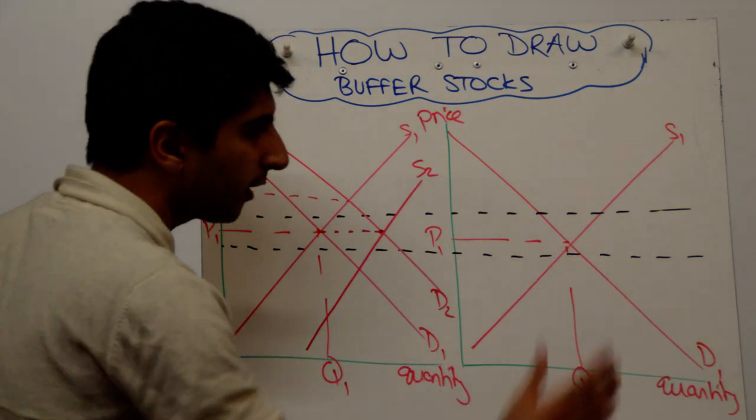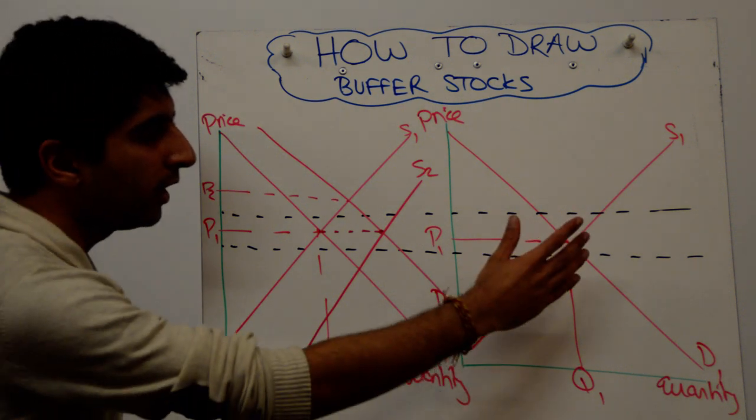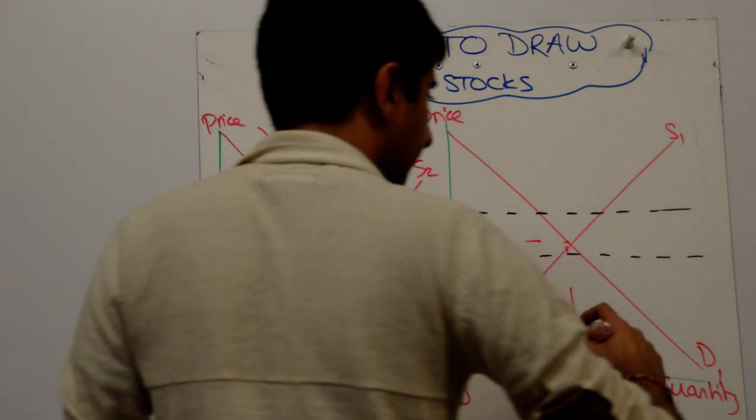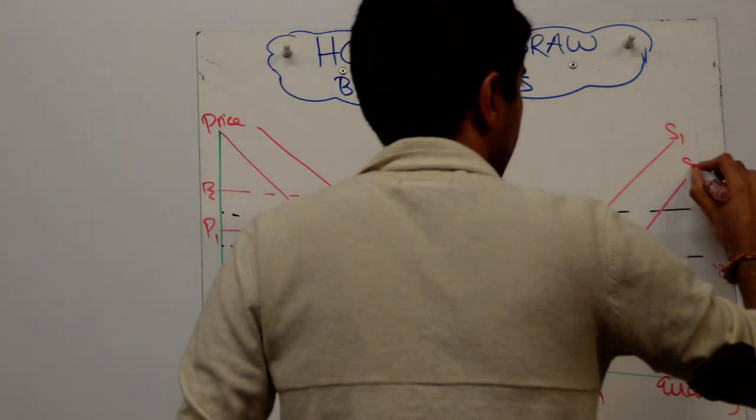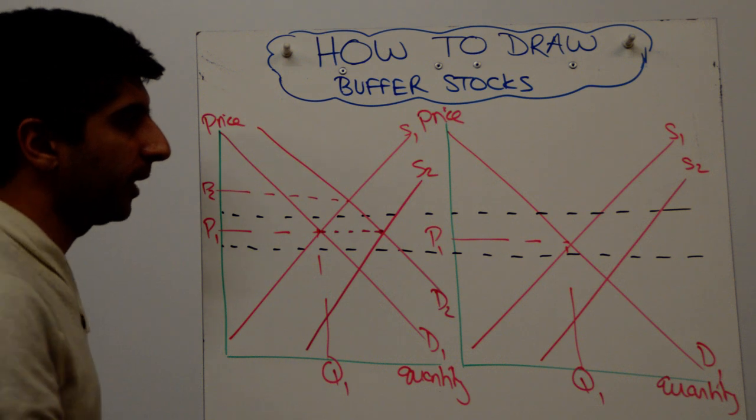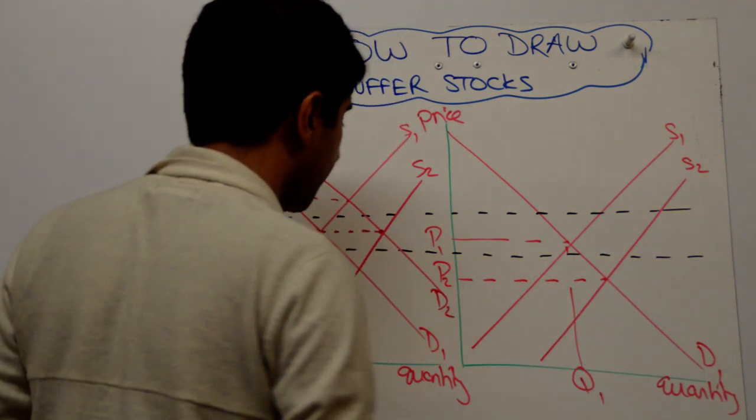Let's move to this diagram here. What if the primary commodity was under pressure of falling in value? Well, you would show that by shifting supply to the right. So let's shift supply to the right. So maybe that's why the price is under pressure of falling, maybe that's because of a really good harvest or something, good weather. And that would lead to a lower price of P2.